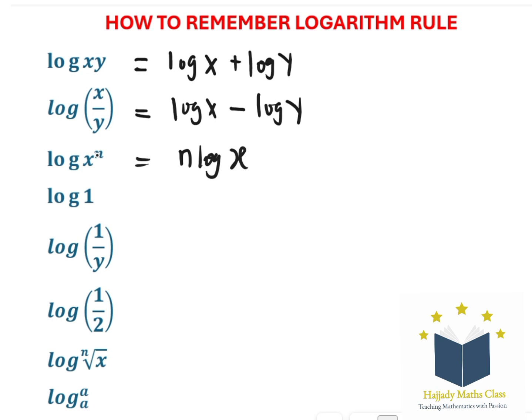Looking at the fourth rule, we have log 1. There's something about logarithms here. If the base is not given to you, you assume that the base is 10.